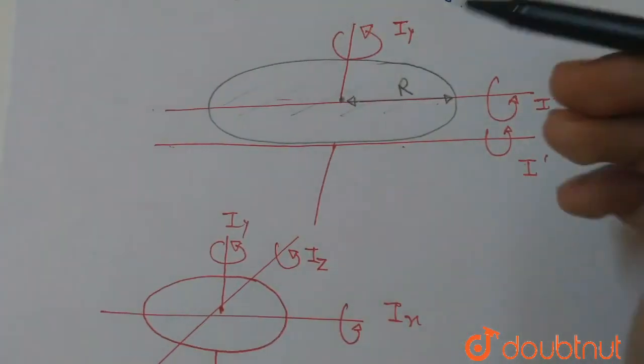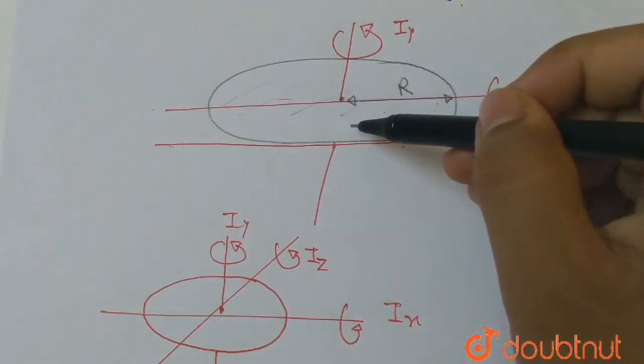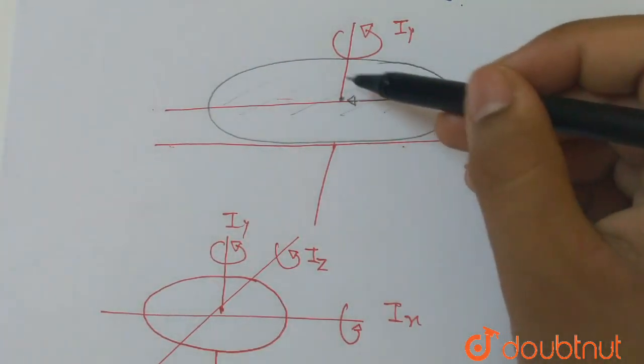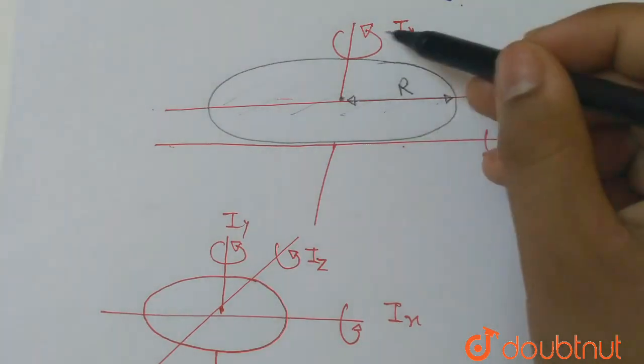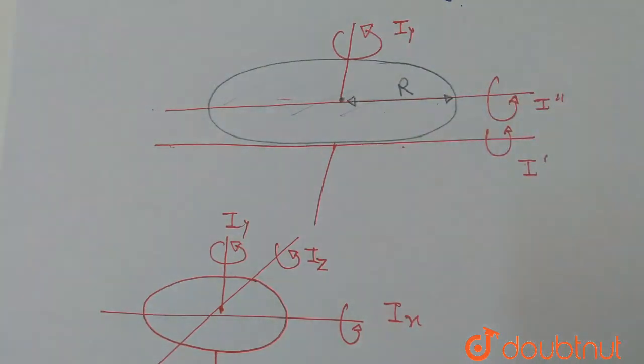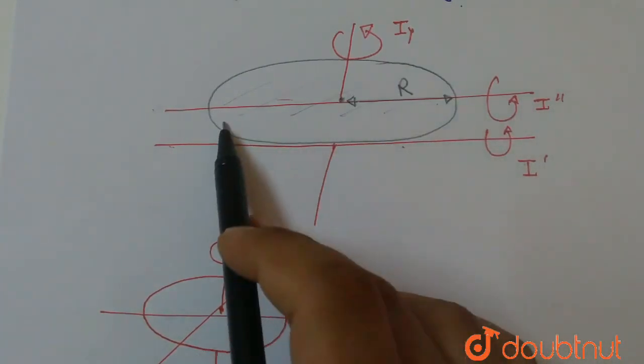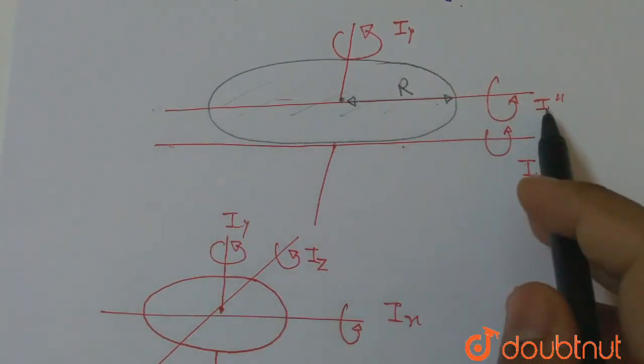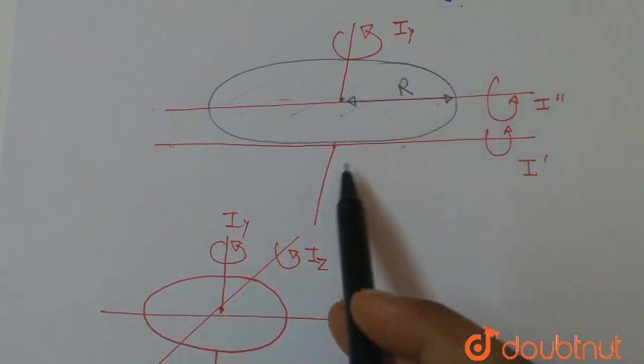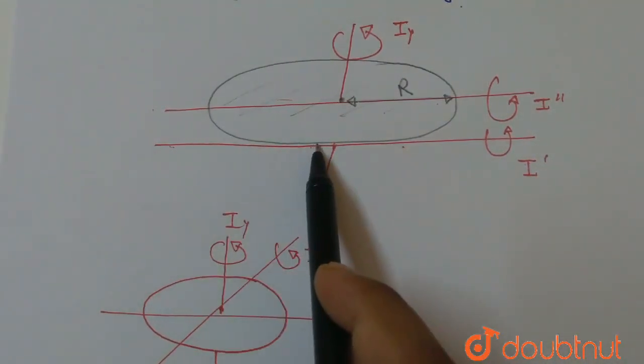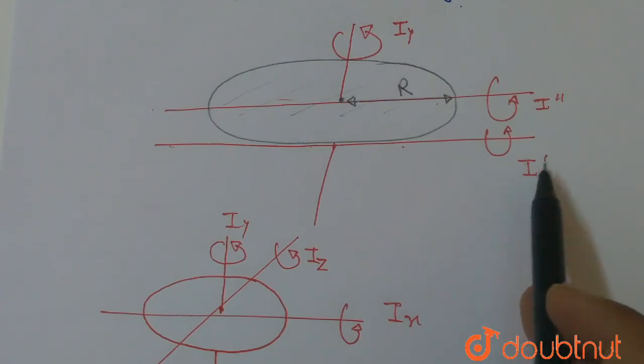Now the moment of inertia we will find is passing through the center and perpendicular to this plane. This is Iz. The moment of inertia through the diameter of this disk is I-double-dash, and the moment of inertia tangential to the disk is I-dash.